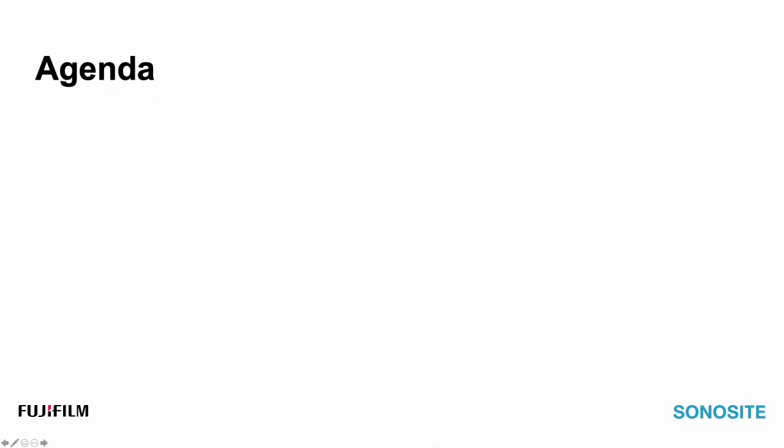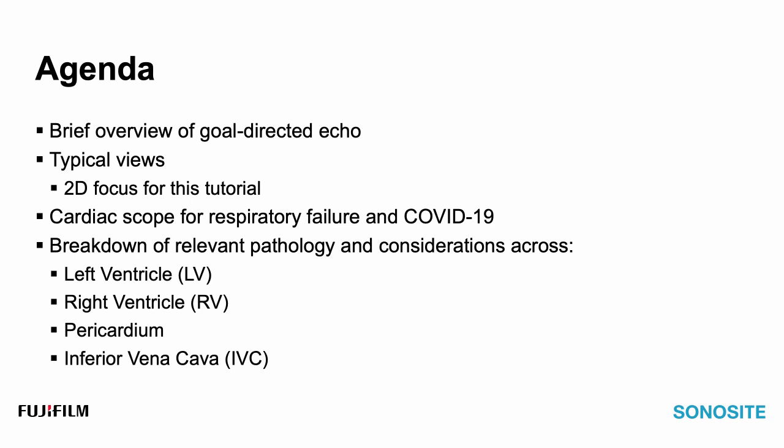Our agenda today will include an overview of goal-directed echo as a whole, and we'll review some of the typical views in goal-directed echo with a focus only on 2D echo views. We will not be reviewing Doppler or spectral Doppler, though I will provide a couple of resources for those with an appetite for those techniques. We'll review the cardiac scope ideal for assessing those with respiratory failure and in particular with COVID-19, and we'll break down some relevant pathology useful to look for in all comers presenting with respiratory failure.